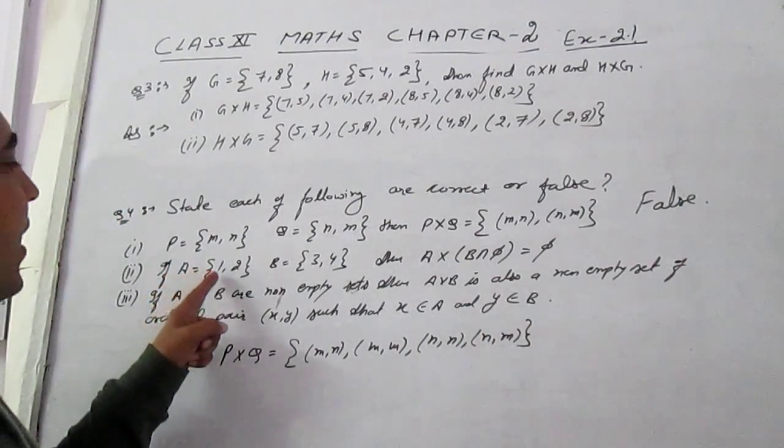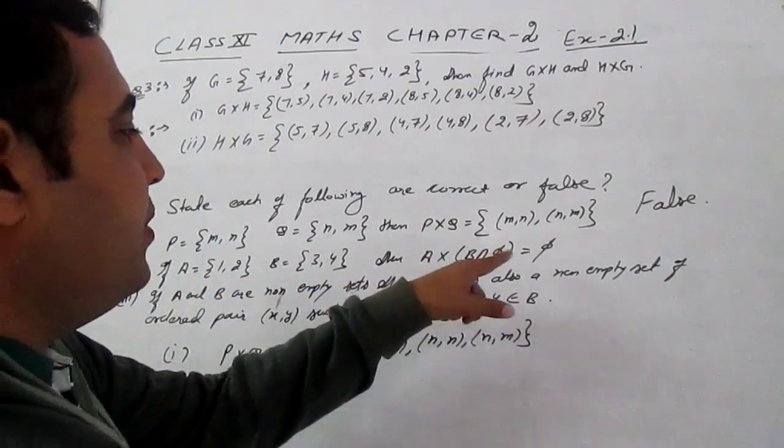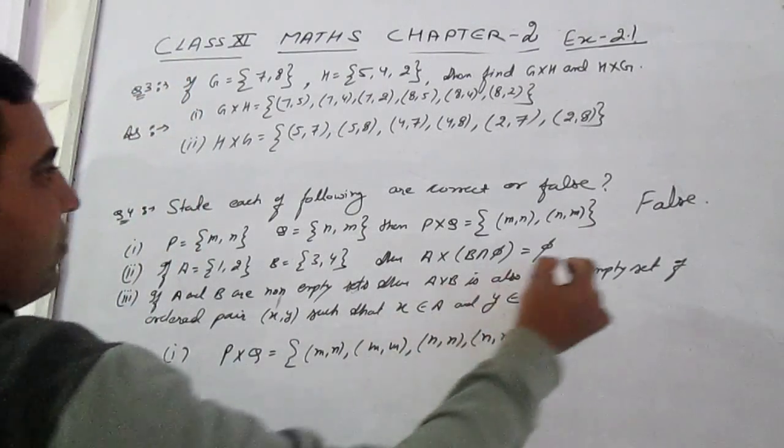Second part, if set A elements are 1, 2, B has elements 3, 4, then A cross B intersection phi is equal to phi. It is true.